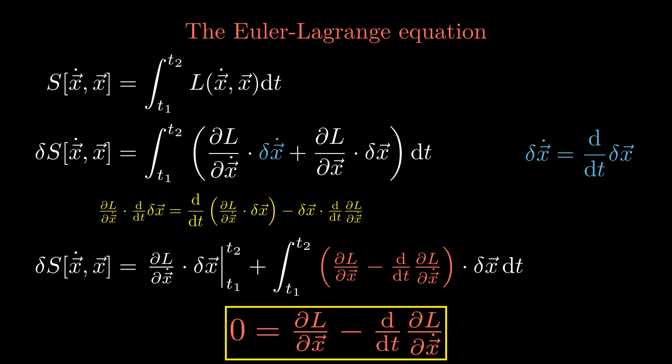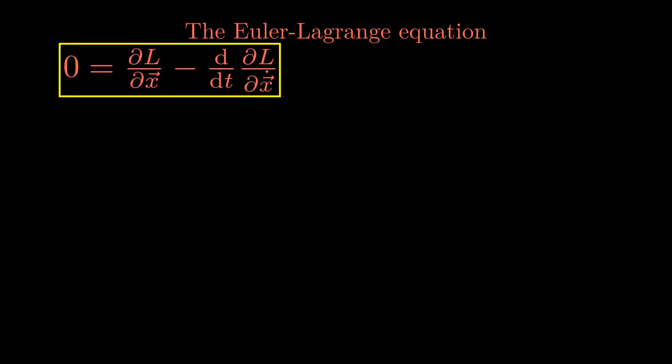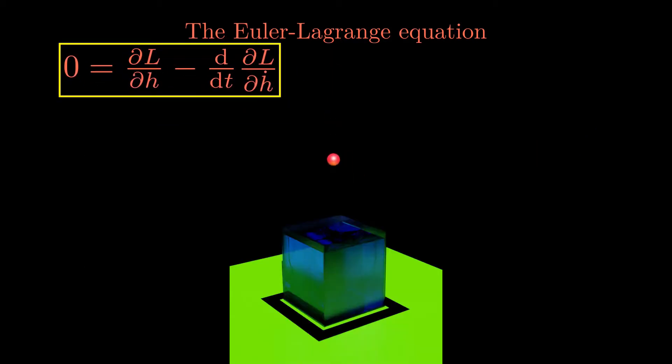We now can forget all the variational calculus. We just can store in the back of our minds that whenever the Euler-Lagrange equation is calculated, one is implicitly looking for the trajectories that are realized in nature and that satisfy the principle of least action. We go back one more time to our simple example of an object that falls from a height of 5 meters.